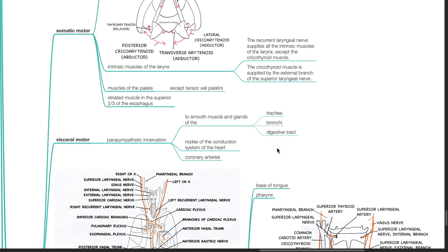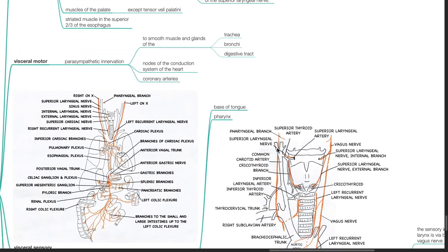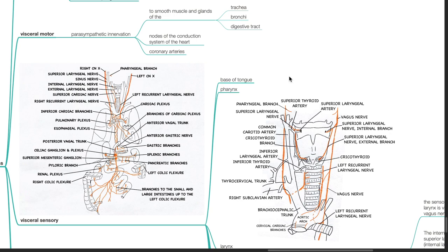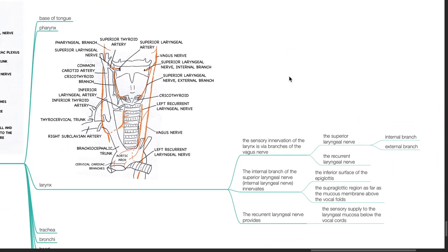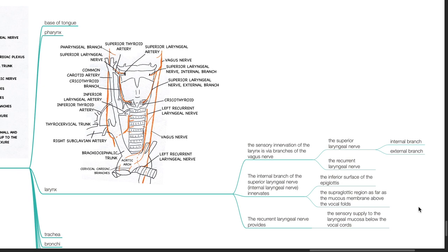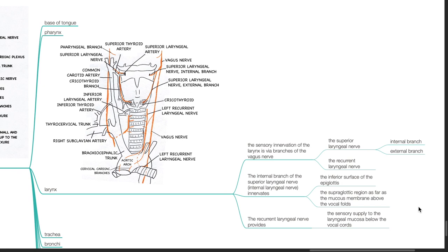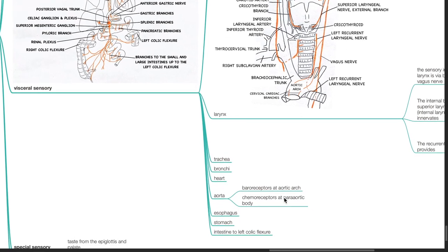Parasympathetic innervation also extends to the nodes of the conduction system of the heart and coronary arteries. Visceral sensory input from the base of the tongue, the pharynx, and the larynx — the sensory innervation of the larynx is via branches of the vagus nerve: the superior laryngeal nerve (internal and external branches) and the recurrent laryngeal nerve. The internal laryngeal nerve innervates the inferior surface of the epiglottis and the supraglottic region as far as the mucous membrane above the vocal cords. The recurrent laryngeal nerve provides sensory supply to the laryngeal mucosa below the vocal cords. Cranial nerve 10 also receives visceral sensory information from the trachea, bronchi, the heart, the aorta, from baroreceptors at the aortic arch and chemoreceptors at the para-aortic body, the esophagus, the stomach and intestines up to the left colic flexure.